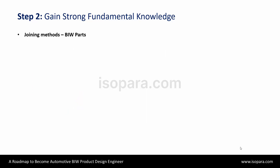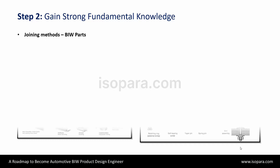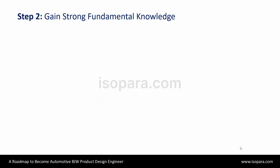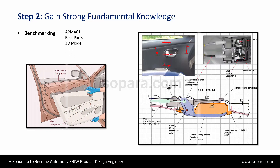You have to understand the different joining methods of BIW parts. Here, you will understand how rivets, stacking, stamping, hemming, crimping, and these kinds of features are developed for joining. There is also a need to understand how a car is developed, and how a competitor's car is benchmarked to develop a new vehicle, and what the benchmarking strategies are.